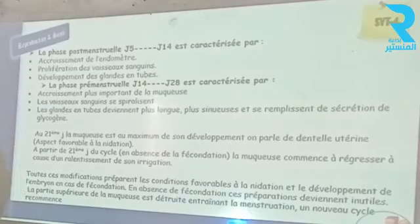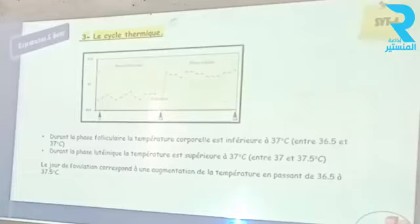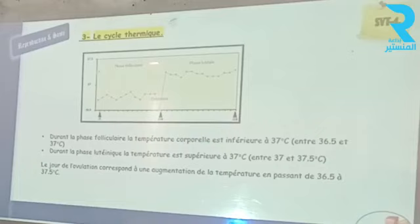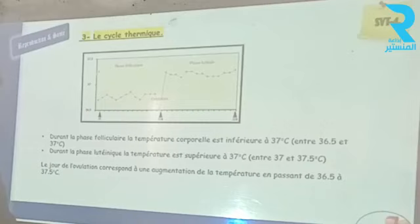Les modifications touchent aussi, de façon cyclique, la variation de la température chez la femme. Durant la phase folliculaire ou préovulatoire, la température corporelle est inférieure à 37°C — elle varie entre 36 et 36,5°C. Pendant la phase lutéinique ou pré-menstruelle, la température est supérieure à 37°C, pouvant atteindre 37,5 à 38°C. Il y a une augmentation de température le jour de l'ovulation, passant de 36,5 à 37,5 — on appelle ça une hyperthermie.